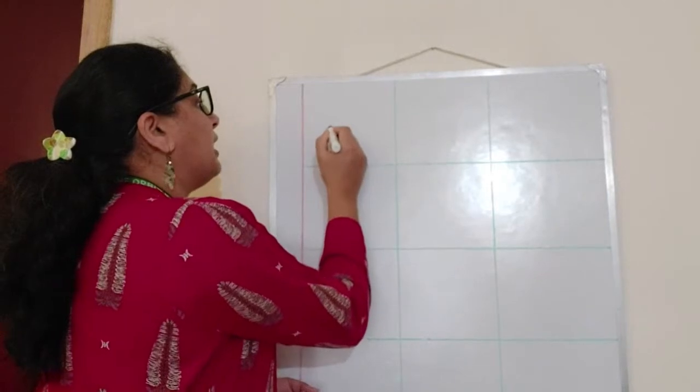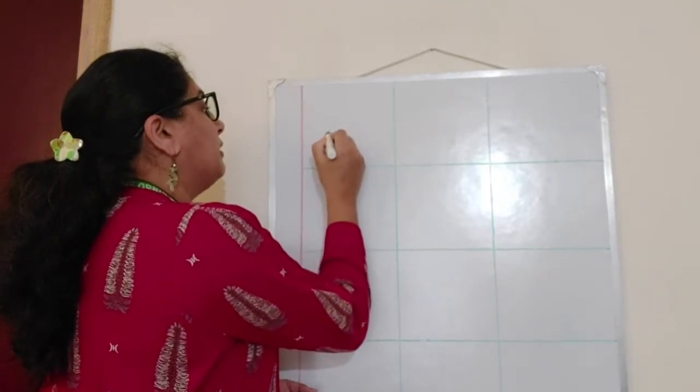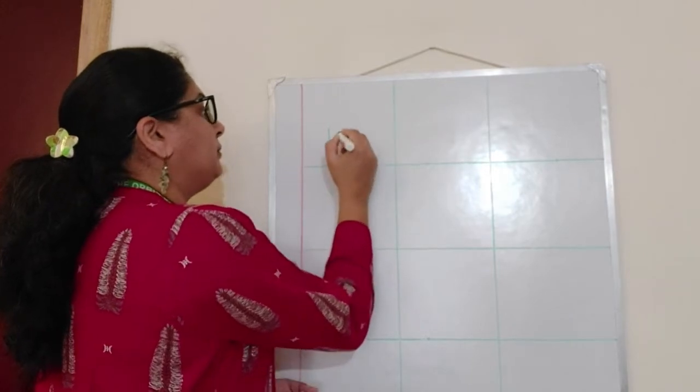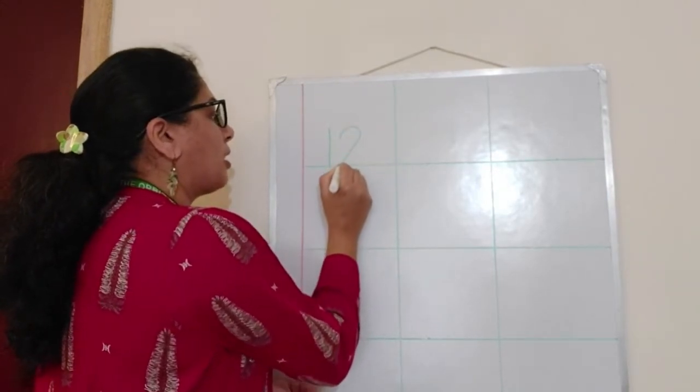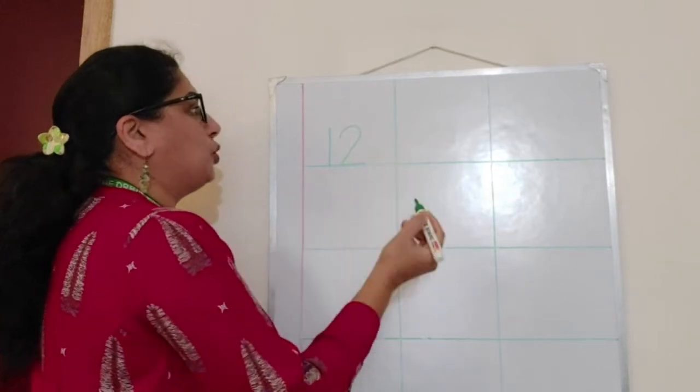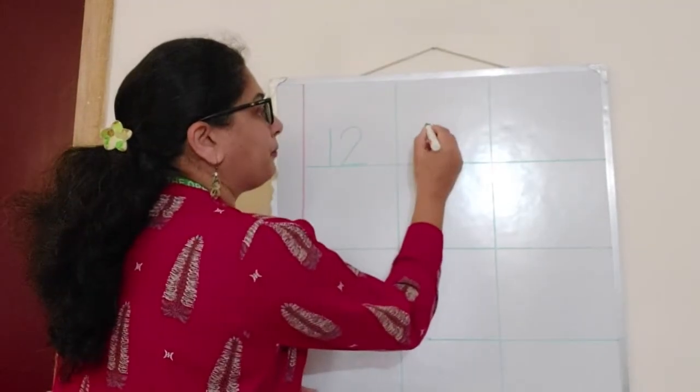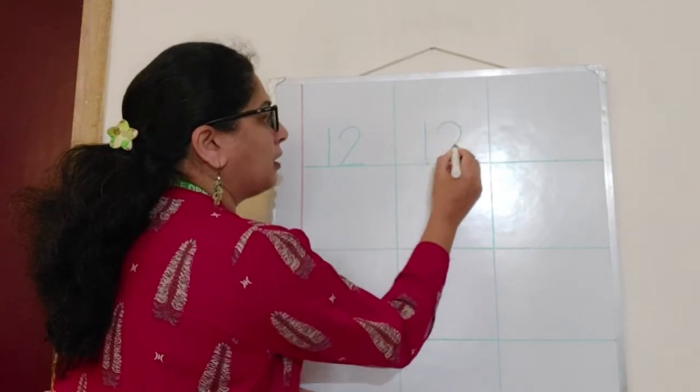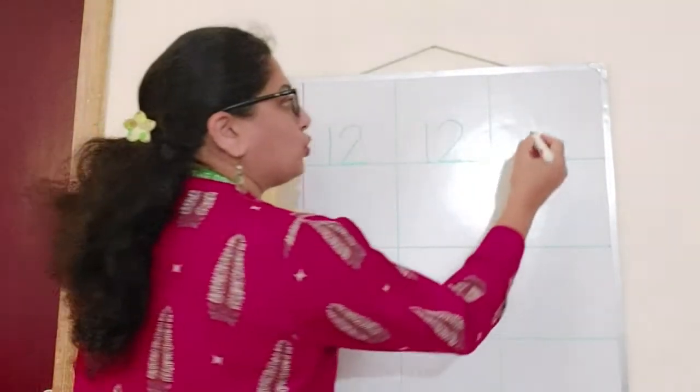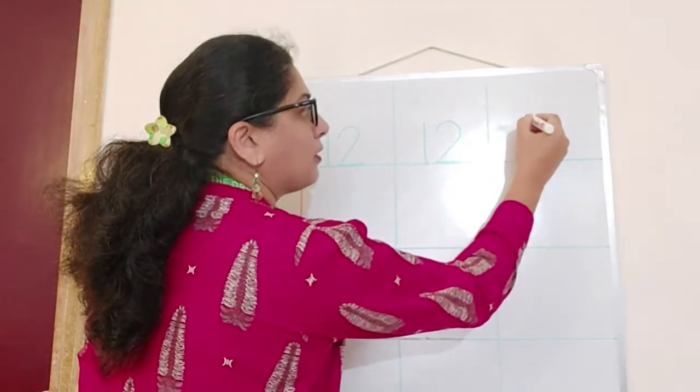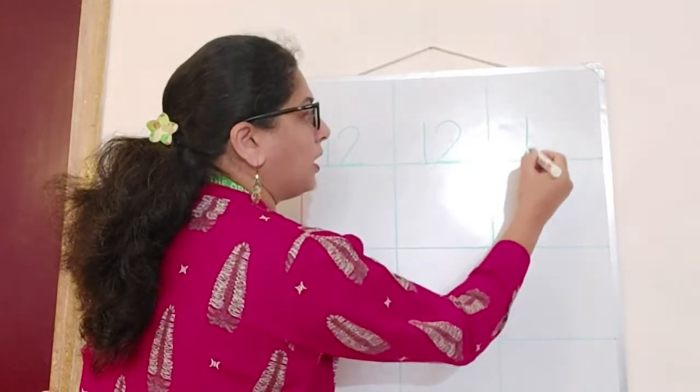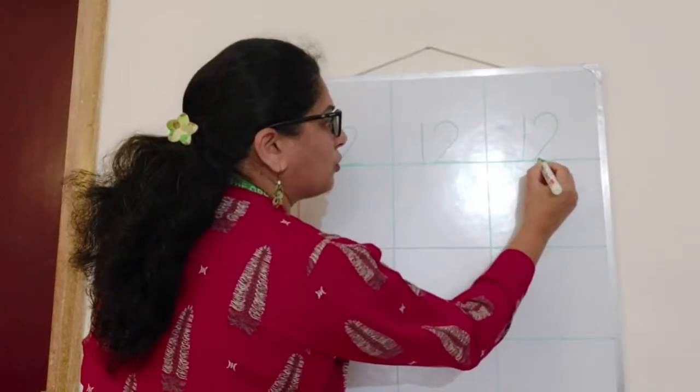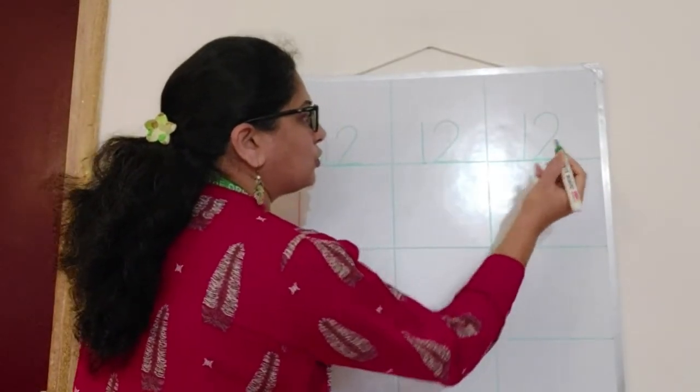So I will start here. So 1, 2, 12. 1, 2, 12. 1, 2, 12.